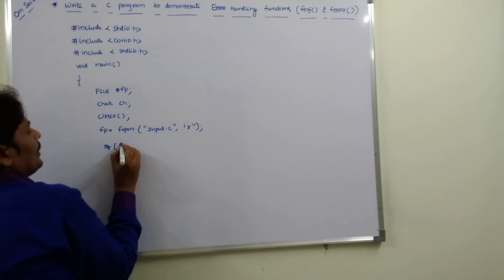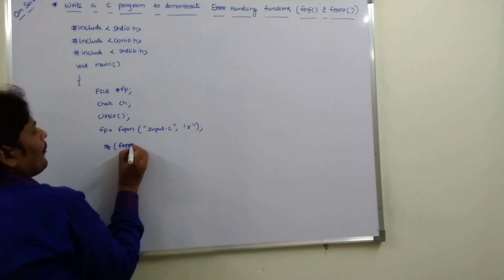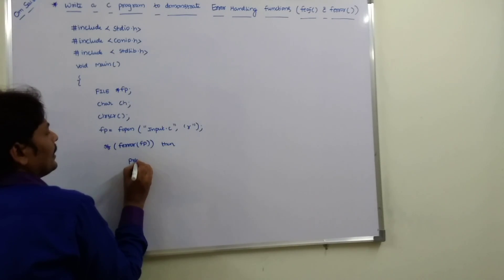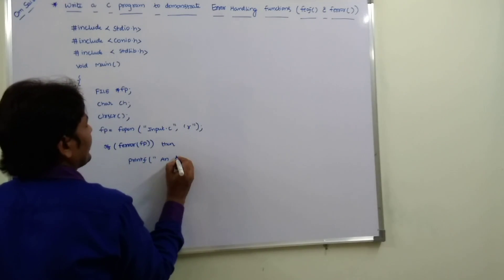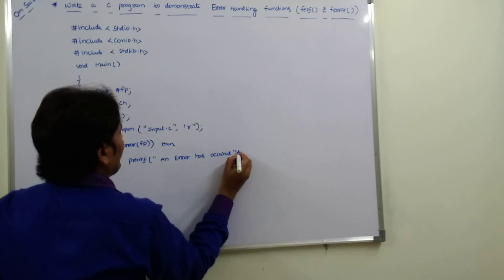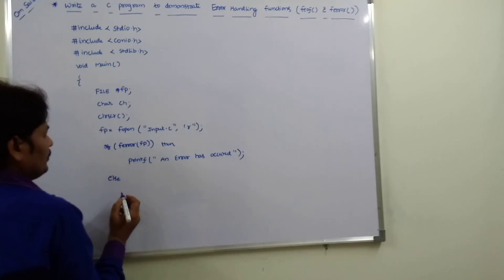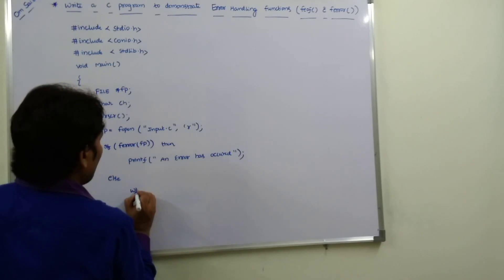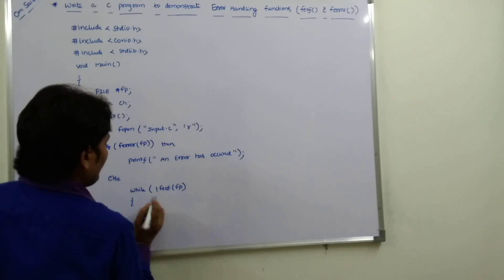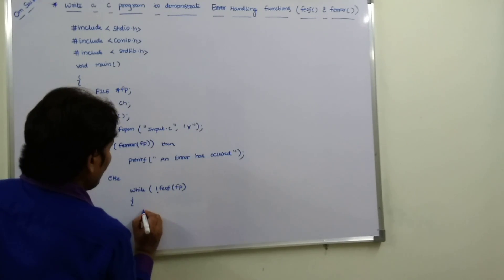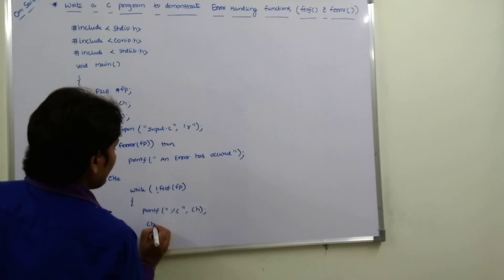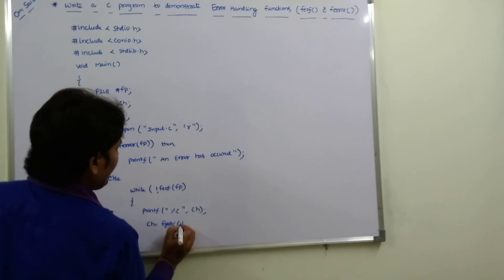Next, we check: if(ferror(fp)) — this checks if any error occurred while opening the file. If an error occurred, we print "An error has occurred". Otherwise, in the else part, we use: while(!feof(fp)) — which loops until the end of the file. Inside the loop: printf("%c", ch); and ch = fgetc(fp);